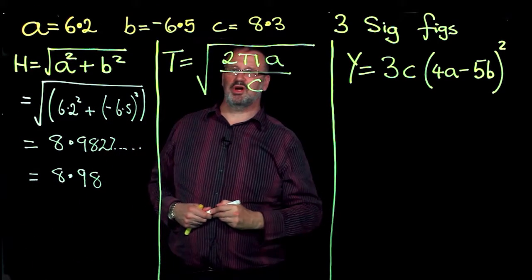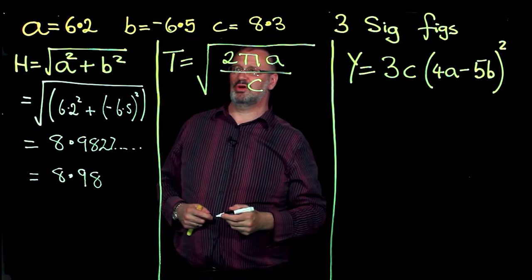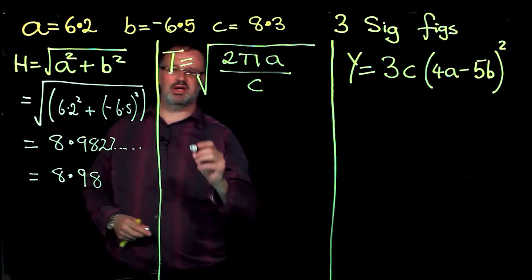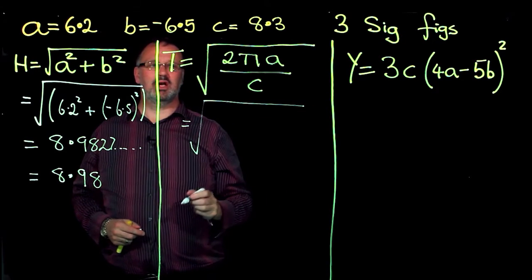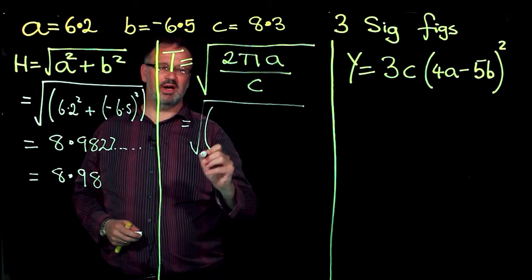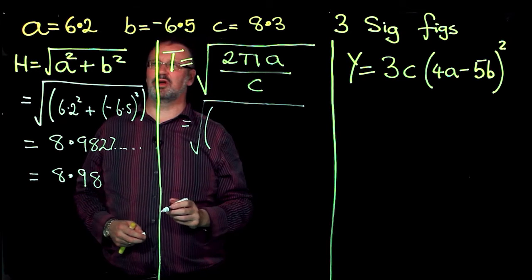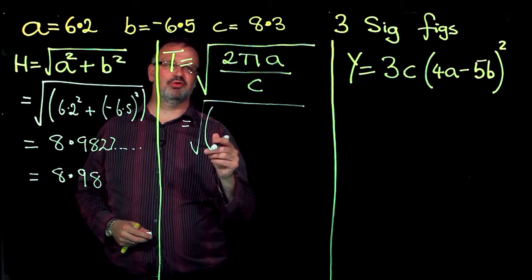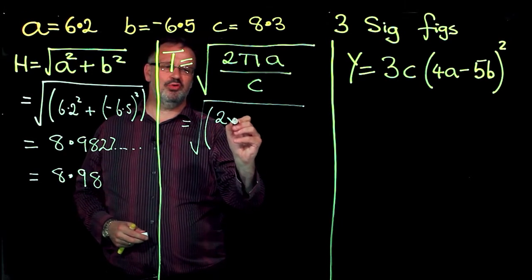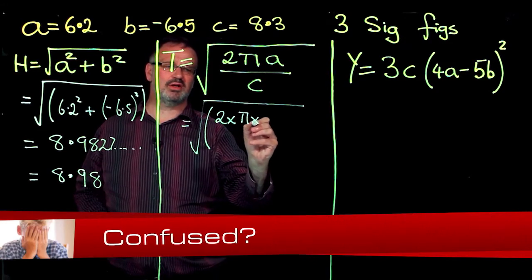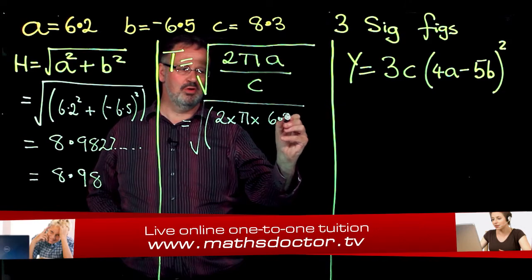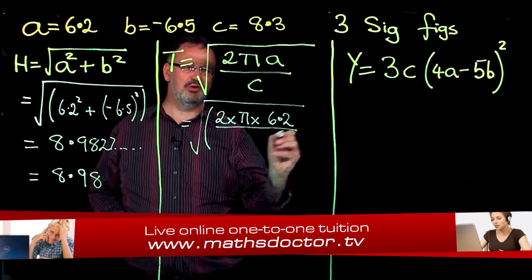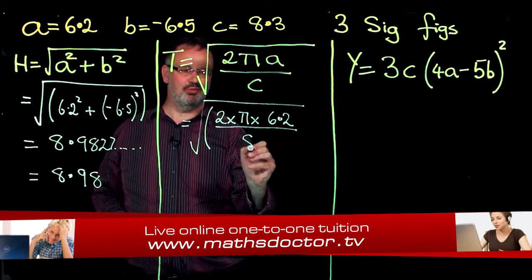Similarly with this one, I've noticed I've got a fraction, and I'm going to use the fraction button on my calculator. So this will equal the square root of, and again, I will have a bracket, and then I will use my fraction button on the calculator, 2 times pi times the value of A, which is 6.2, divided by, and the bottom number is 8.3.